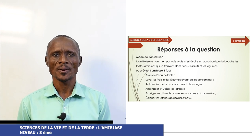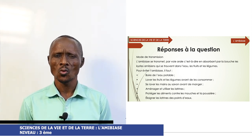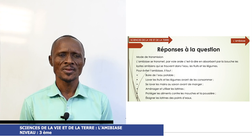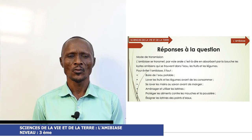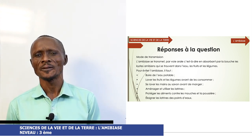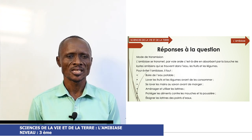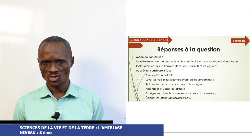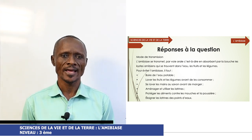L'amibiaz se transmet par voie orale, c'est-à-dire en absorbant par la bouche les kystes amibiens qui se trouvent dans l'eau, les fruits et les légumes. Pour éviter l'amibiaz, il faut boire de l'eau potable, laver les fruits et les légumes avant de les consommer, se laver les mains au savon avant de manger, aménager et utiliser les latrines, protéger les aliments contre les mouches et la poussière, éloigner les latrines des points d'eau.